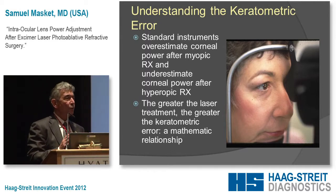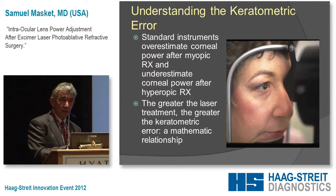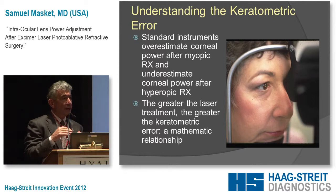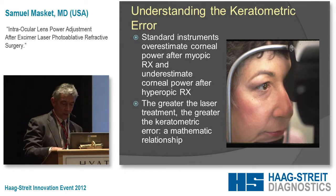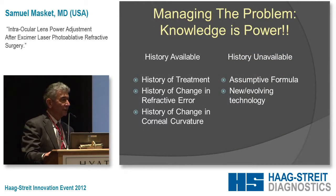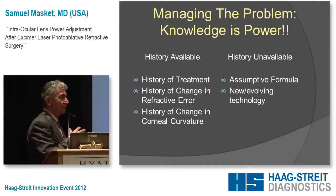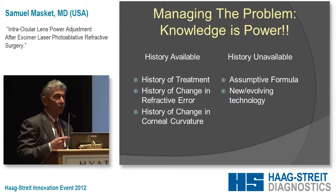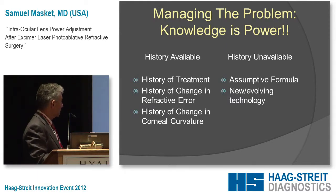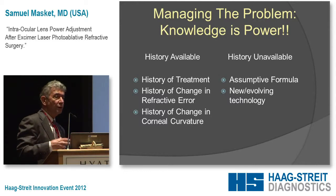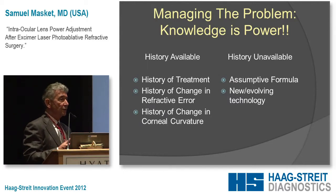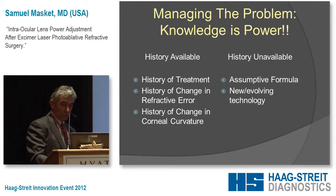There is a mathematical relationship: the more treatment that has been done, the greater the effect on the ratio of anterior and posterior curvatures. In managing the problem, as in everything else, knowledge is power. History of treatment, history of refractive change, and history of corneal curvature change will help you. When you don't have that, you need more clever approaches — assumptive formulas or evolving technology such as OCT.